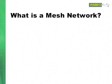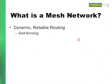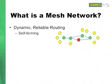Let's start off with what we mean by a mesh network. A mesh network provides dynamic, reliable routing and one of the defining properties of a mesh network is that it's self-forming. That means that the network nodes automatically establish routes to new nodes when they become available.